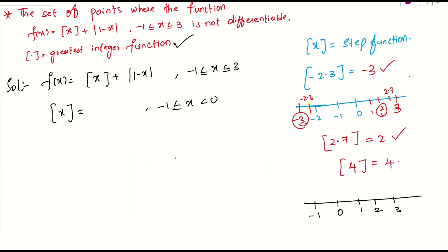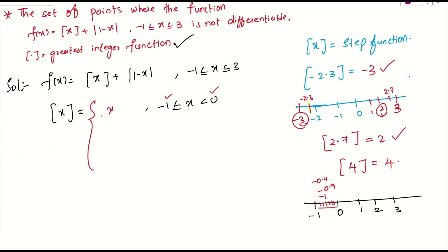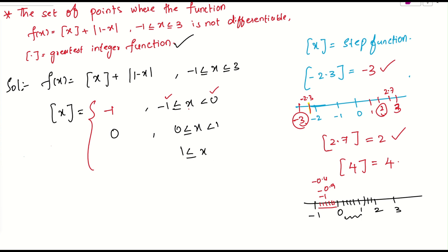If I take any value x between -1 and 0, box(x) = -1. For x between 0 and 1, box(x) = 0. For x in [1, 2), box(x) = 1. For x in [2, 3), box(x) = 2. And at x = 3, since it's an integer, box(3) = 3.